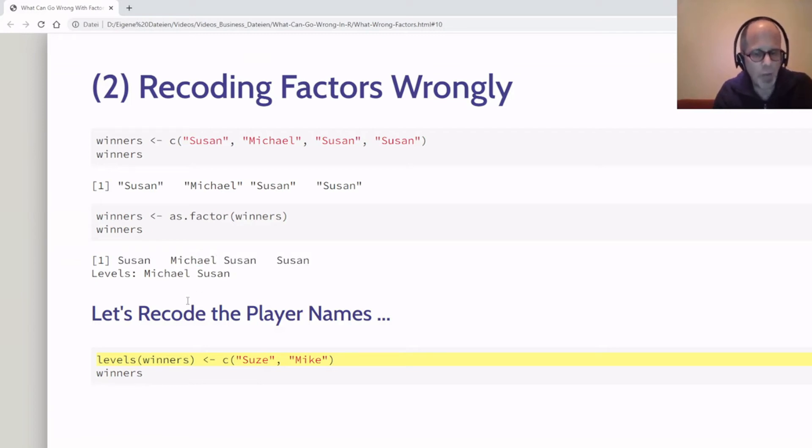Now let's recode the player names. If you like to think about it for a moment, you can look at this code and predict what the output will be. You can pause the video now if you want. I'll reveal it in a moment. So I'm recoding the levels of this factor. Before we had Susan and Michael, and now let's say the players got more familiar—Susan said she wants to be called Zeus for this game, and Michael wants to be called Mike. I change the levels of this factor to Zeus and Mike, and now let's see what happens when I print out winners.